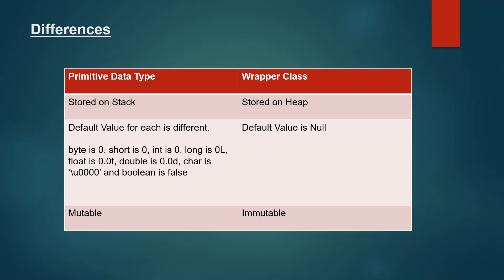Primitive data types are mutable — if you declare a variable as a primitive data type, you can modify its value later in the program. But wrapper class objects are immutable. Whenever you assign a value to a wrapper class object and then modify it, a new object gets created on the heap memory. That is why it is called immutable.